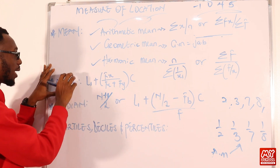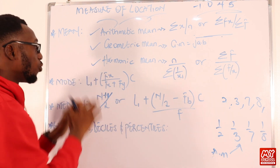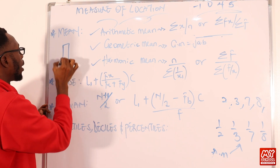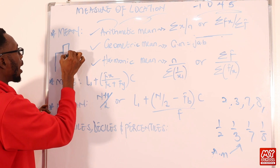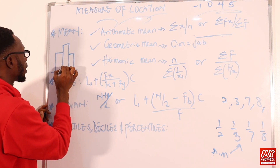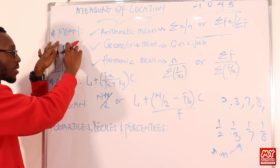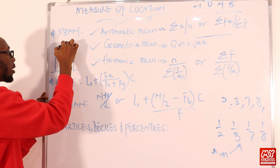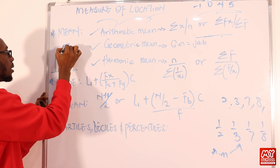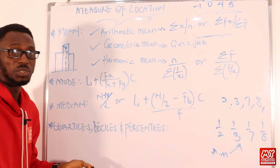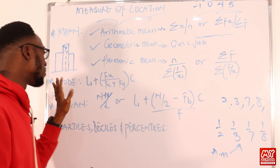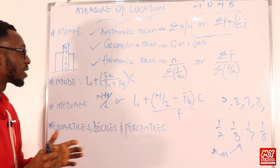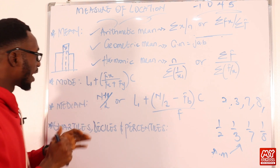You can also get the mode from a histogram — locate the rectangle with the highest height. From the top corners of that tallest bar, draw diagonal lines to the top corners of the adjacent bars on each side. Where those lines intersect, drop a vertical line down — that point on the x-axis is your mode. Alternatively, you prepare a table with frequencies, cumulative frequencies, and class boundaries to compute it.